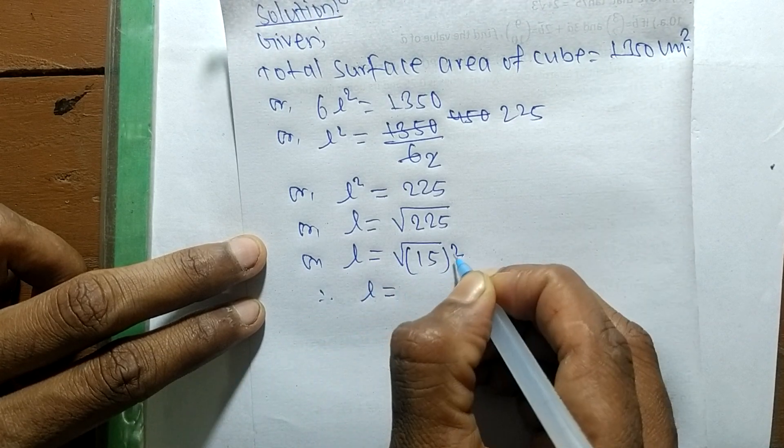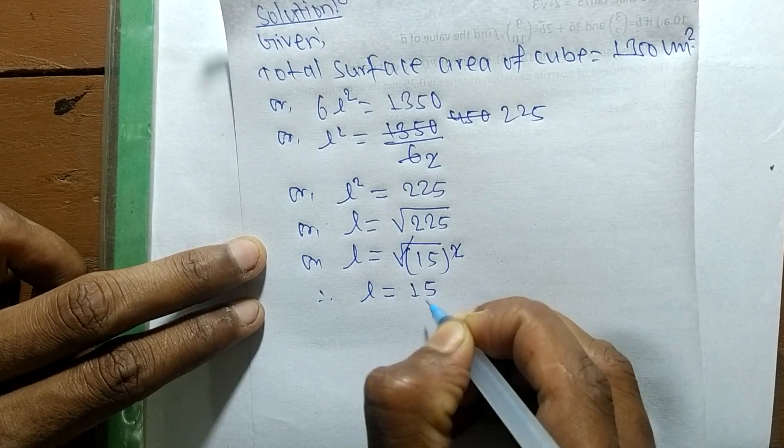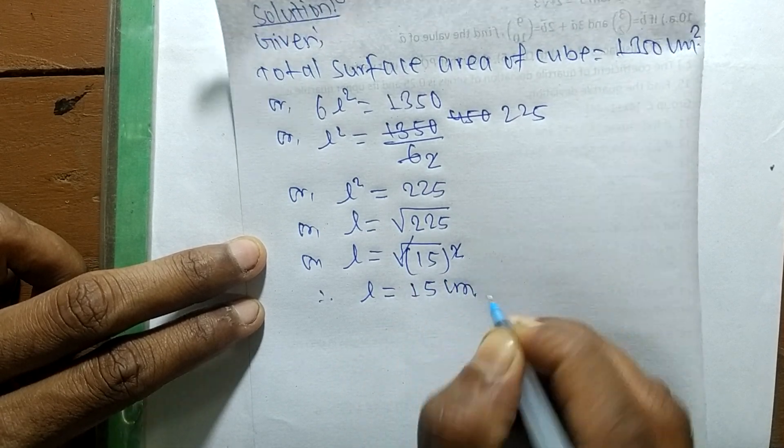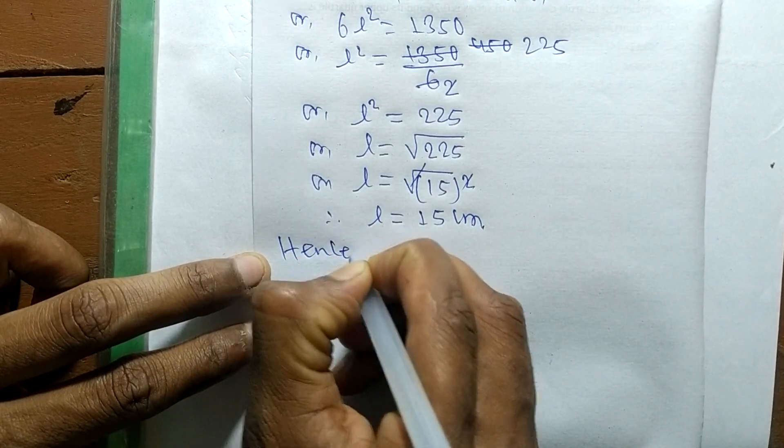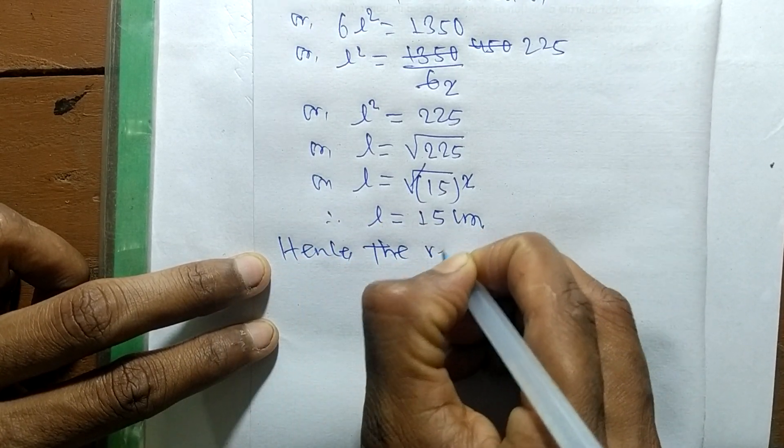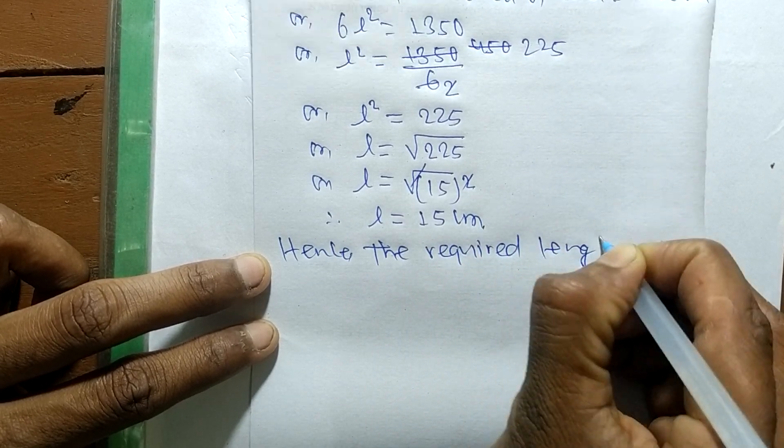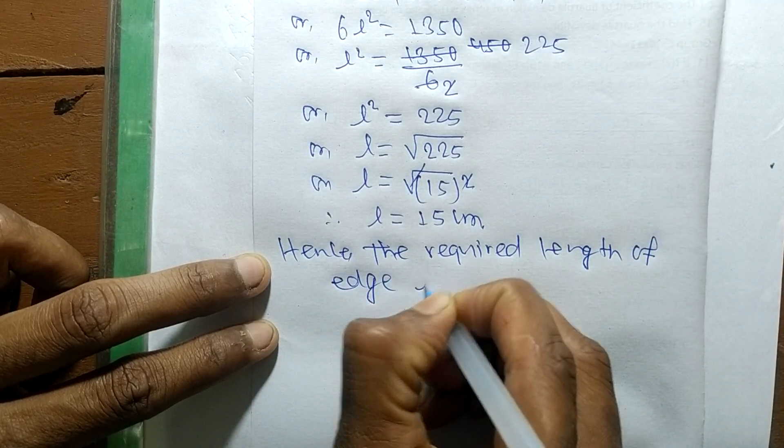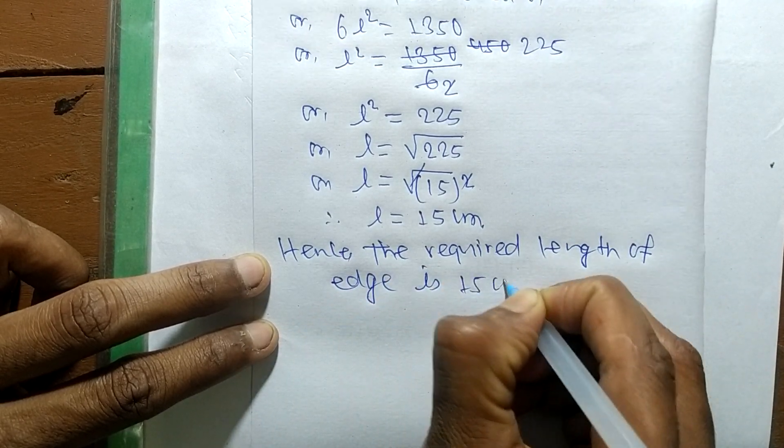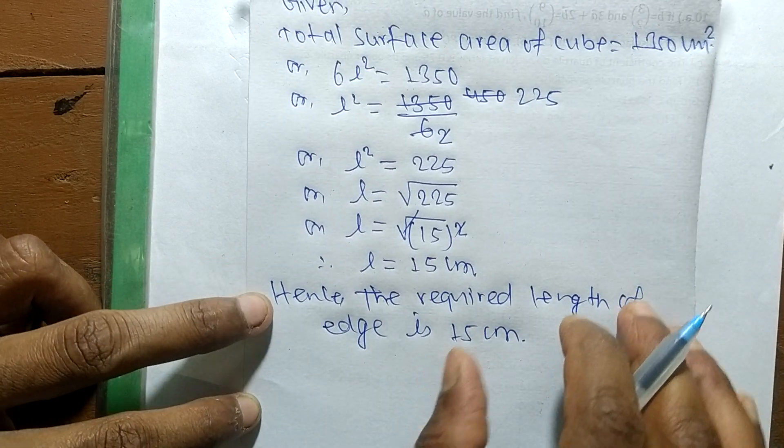The square and square root cancel, and the remaining is 15 cm. Hence the required length of edge is 15 centimeter.